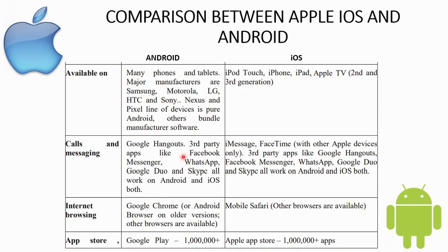For calls and messaging, Android uses Google Hangouts as default, and third-party apps like Facebook Messenger, WhatsApp, Google, and Skype are all available. iOS uses iMessage and FaceTime natively for Apple devices, and also supports third-party apps like Google Hangouts, Facebook Messenger, and WhatsApp.